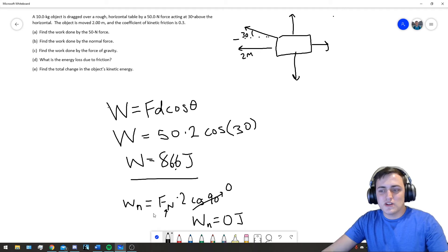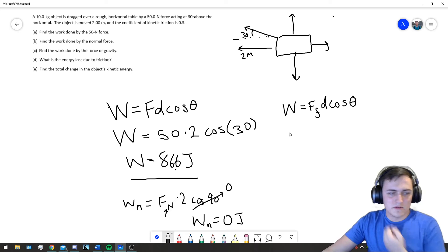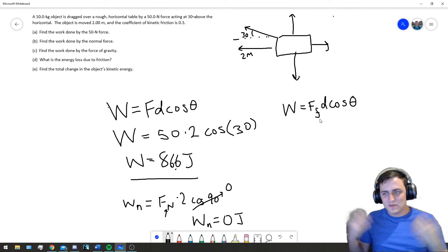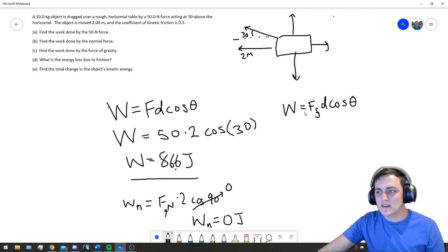And, now we look at the energy lost due to friction. So, the work due to the friction force, you can call it FF, times distance, times cosine theta. Well, now we need to figure out what that friction force is, which takes a little bit of work.